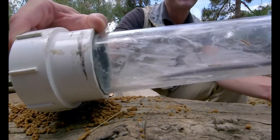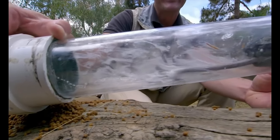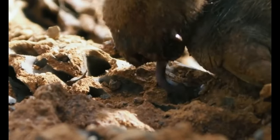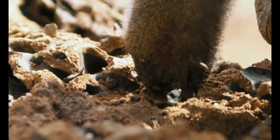Although anteaters have no teeth, they have long tongues covered in a layer of sticky saliva, which flicks up to 150 times per minute, and helps them suck up more than 35,000 ants and termites per day.